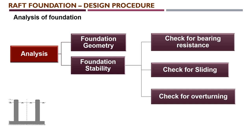Similar to this raft foundation, the type of foundation will also change according to the soil report. If the soil is not sufficient — such as cohesionless soil, black cotton soil, or very loose soil — then we need to go for a pile foundation or soil improvement rather than a raft foundation. So the soil report will change your decision on which type of foundation to use, and it must be consulted to arrive at the foundation geometry.